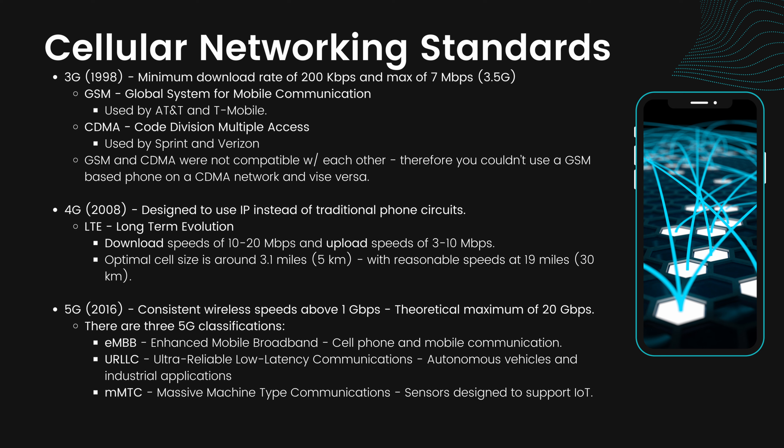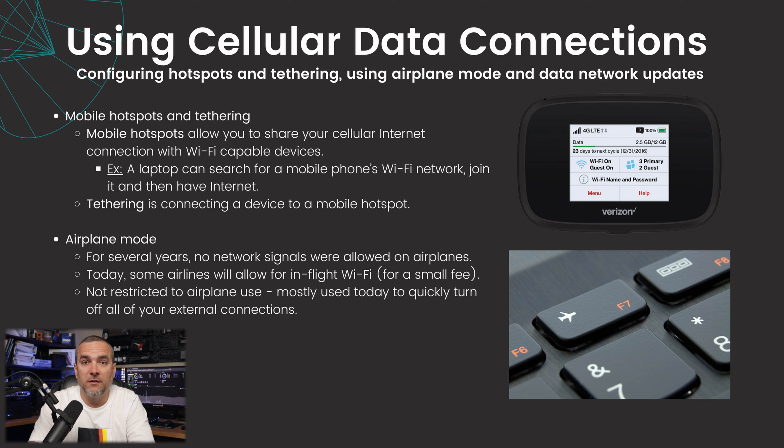4G had an optimal cell size of around 3.1 miles with reasonable speeds at around 19 miles. 5G was introduced in 2016 and offers consistent wireless speeds of around 1 gigabit per second with a theoretical maximum of around 20 gigabits per second. There are three 5G classifications: eMBB, enhanced mobile broadband for cell phone and mobile communications; URLLC, ultra-reliable low-latency communications for autonomous vehicles and industrial applications; and mMTC, massive machine type communications for sensors supporting IoT.